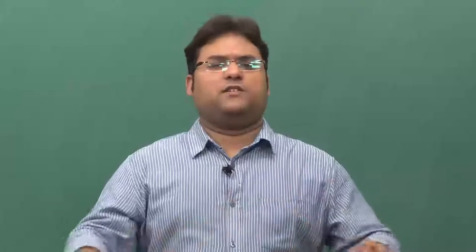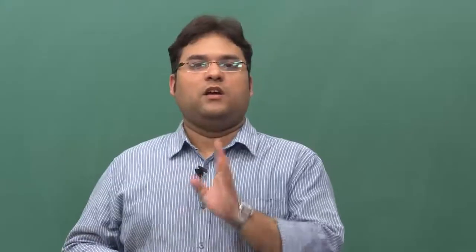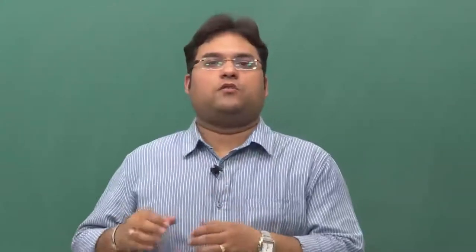Before we move further, let me quote David Marr from one of his papers in 1982. He was basically talking about how Gibson had approached perception. He says: 'The detection of physical invariance like image surfaces is exactly and precisely an information processing problem in modern terminology, and Gibson vastly underrated the shared difficulty of such detection. Detecting physical invariance is just as difficult as Gibson feared, but nevertheless we can do it, and the only way to understand how is to treat this as an information processing problem.' David Marr is basically talking more about a computational approach to perception — treating the problem of perception as a problem of information processing.